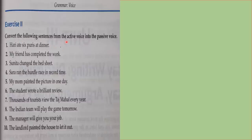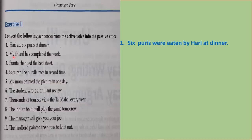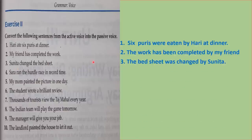Next exercise: convert the following sentences from active voice into passive voice. 'Hari ate six puris at dinner' → 'Six puris were eaten by Hari at dinner.' Since 'ate' is past tense, it has changed to 'were eaten.' 'My friend has completed the work' — 'has completed' is present perfect — → 'The work has been completed by my friend.' 'Sunita changed the bed sheet' → 'The bed sheet was changed by Sunita.' Since 'changed' is past tense, we use 'was changed.' If it were present tense, such as 'Sunita changes the bed sheet,' it would change to 'The bed sheet is changed by Sunita.' So be careful with the tenses of the verbs.